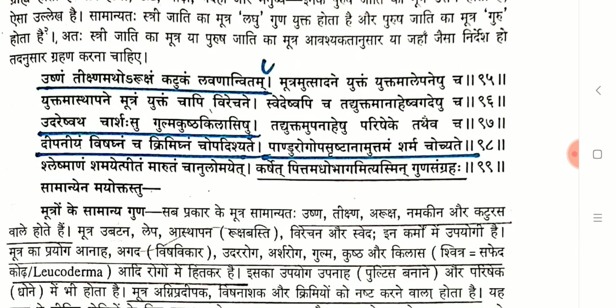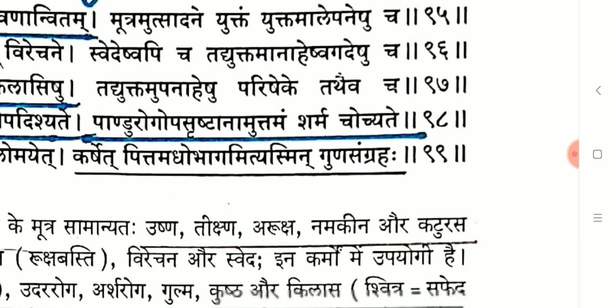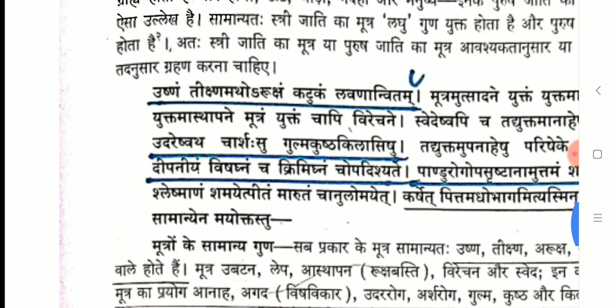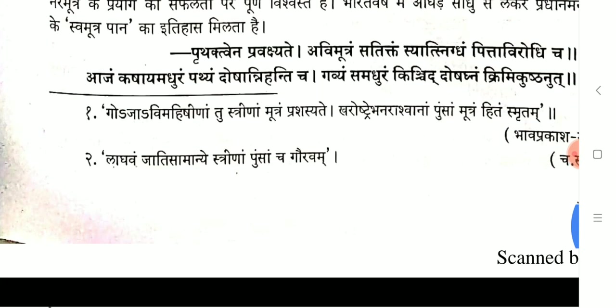Mutra Samanya Guna: questions have come from this topic. 'Pandaroka upashamana mutthamam sharma chochate' — frequently asked. The general qualities of Mutra are Ushna, Tikshna, Ruksha, Katu, Lavana. A tricky question may offer multiple options: characteristics of Mutra; Mutra is good for Udara, Arsha, Gulma, Kushtha; its actions are Deepaniya, Vishagna, Krimighna — and 'all of the above' will be the correct answer. Remember the specific Shlokas and which chapter they are in.